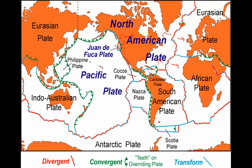North America also has transform plate boundaries. It is transform with the Pacific plate, which marks where the Pacific plate moves northward relative to the North American plate — you likely know that boundary as the San Andreas Fault. The North American plate also has a transform boundary with the Caribbean plate on its southern edge. Each plate is surrounded by different types of plate boundaries. For example, there is a convergent boundary between the South American and Nazca plates, whereas the South American plate is divergent with the African plate.